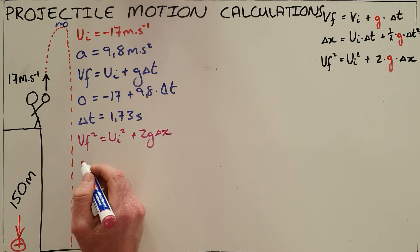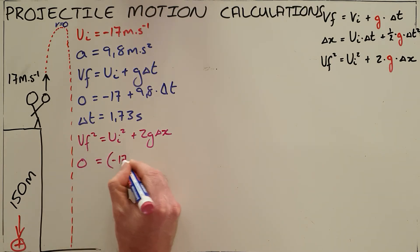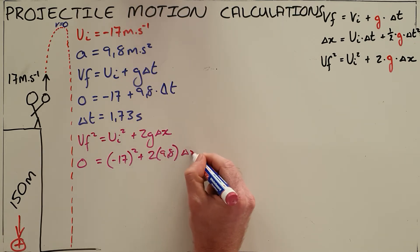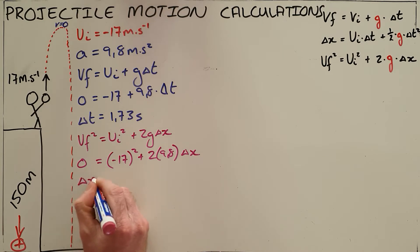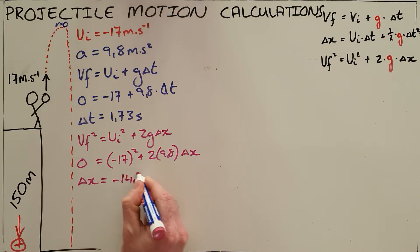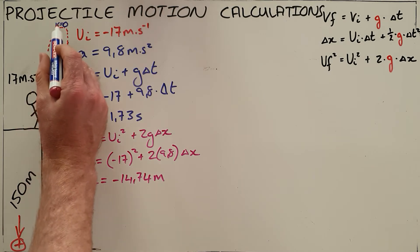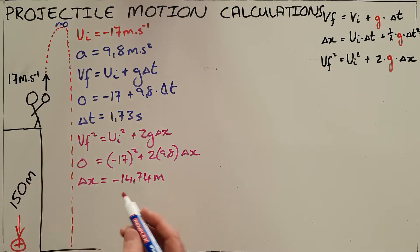The final velocity here we know is once again going to be zero because it's the maximum height. The initial velocity is negative 17, plus 2 times our constant times what we are trying to find. We find that our displacement here is negative 14.74 meters. That displacement being negative tells us that this object has moved upward, upward being our negative direction.